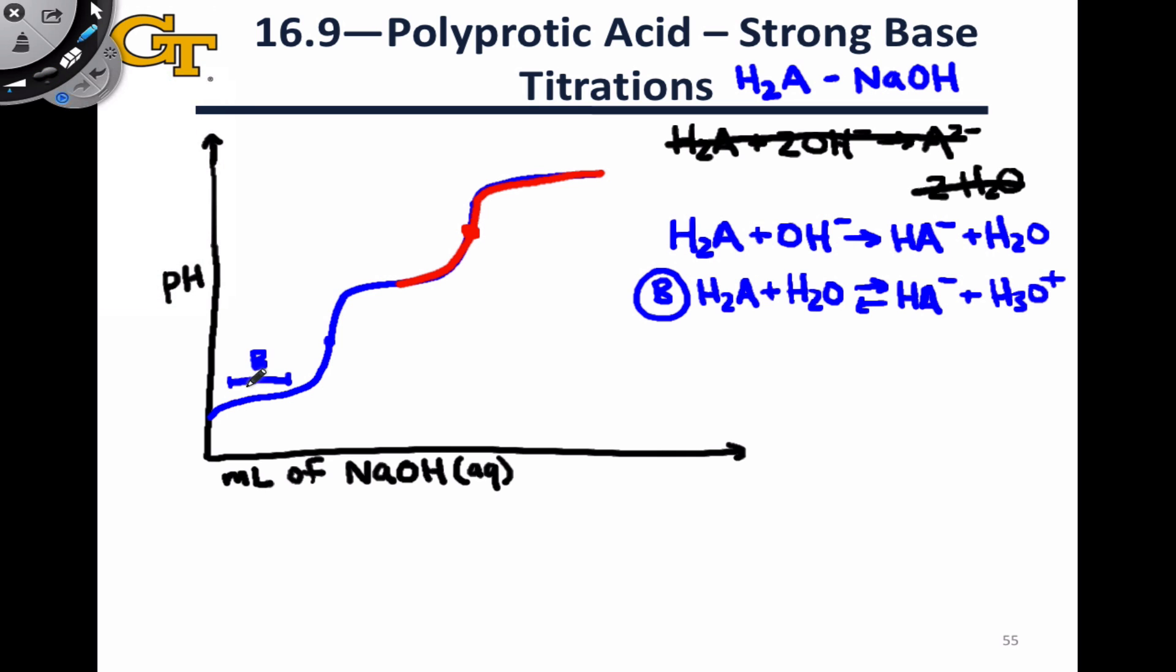As we've seen in class, at the point where the volume of titrant added is halfway to the volume added at the equivalence point, somewhere about here near the middle of the buffer region, the pH at that point is going to be equal to the pKa of the acid, and in particular for a polyprotic acid, pKa1, the first pKa.